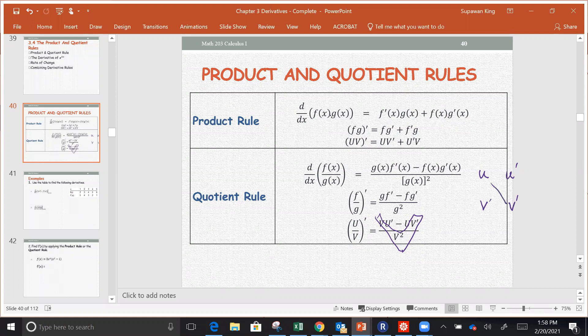And then you're going to use the product of one function and the other function derivative and put them in the right order. The order for the product doesn't matter, but the order of the numerator for the quotient rule does matter.